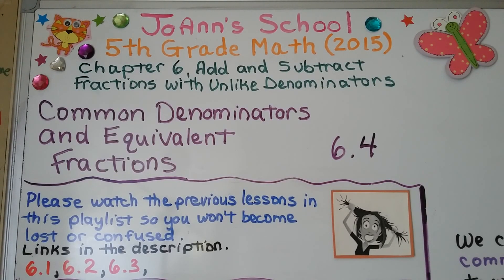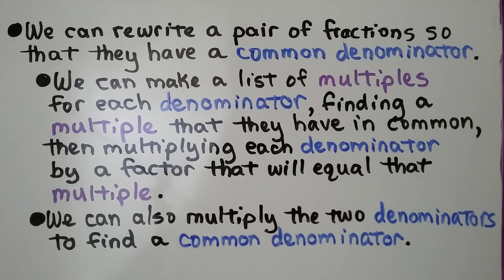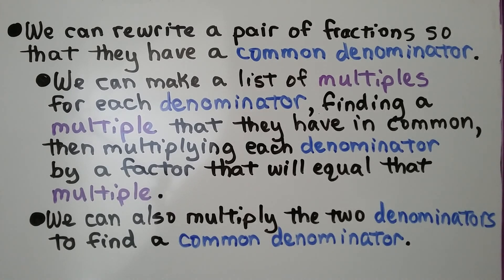Lesson 6.4: Common Denominators and Equivalent Fractions. We can rewrite a pair of fractions so that they have a common denominator. We can make a list of multiples for each denominator, finding a multiple that they have in common, then multiplying each denominator by a factor that will equal that multiple. We can also multiply the two denominators to find a common denominator.